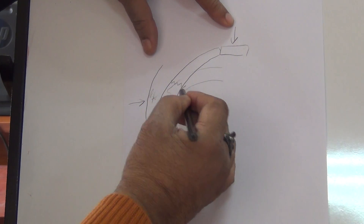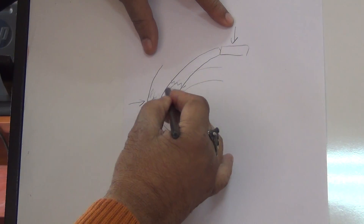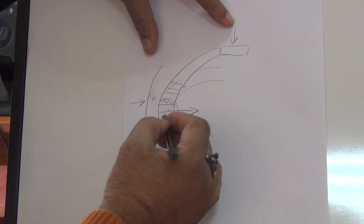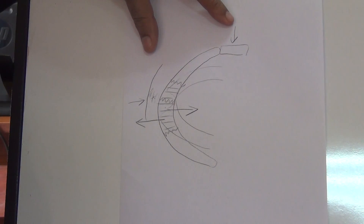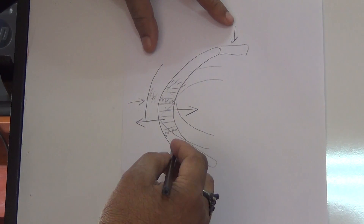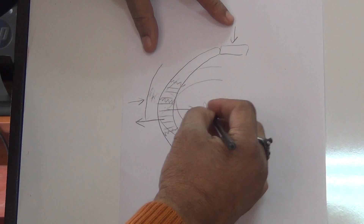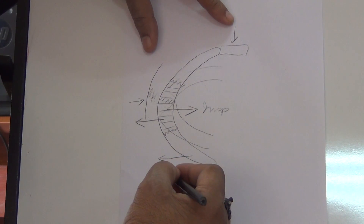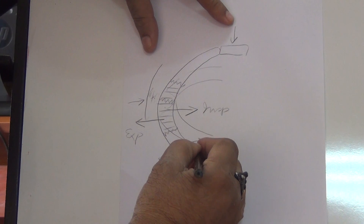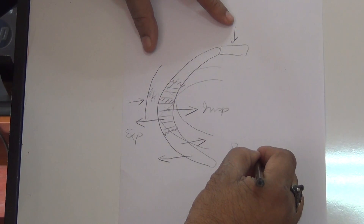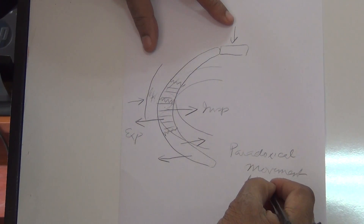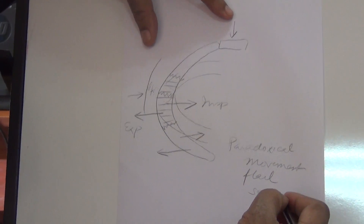If there is a double fracture of a rib, the whole fragment becomes free. It will move inward during inspiration and outward during expiration - paradoxical to the rest of the chest wall. In inspiration it moves in when the rest of the chest wall is moving out; in expiration it moves out when the rest is moving in. This is called paradoxical movement of a flail segment of the chest.